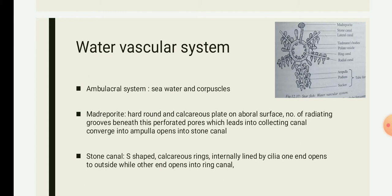This system of canals is filled with fluid consisting of sea water and certain corpuscles. The essential parts of the system are: madreporite, stone canal, ring canal, radial canal, Tiedemann's bodies, Polian vesicle, lateral canal, and the tube feet. We will now study in detail the different parts of the water vascular system.